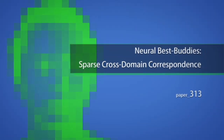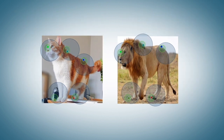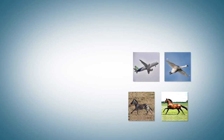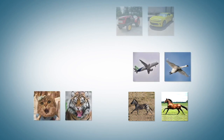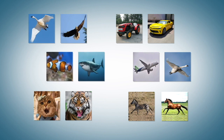We present a new method for sparse correspondence between cross-domain images. Our method is designed for pairs of images where the main objects of interest may belong to different semantic categories and differ drastically in shape and appearance, yet still contain semantically related parts or geometrically similar patterns.